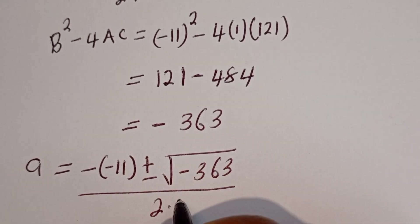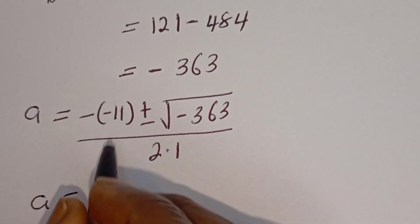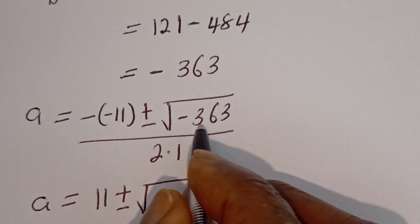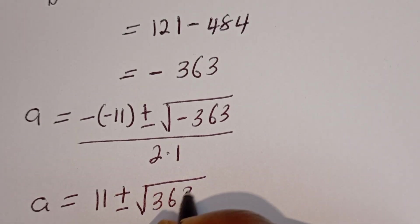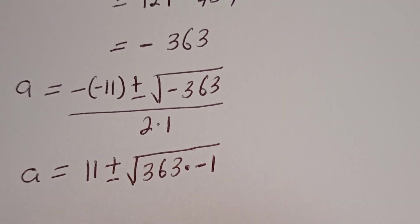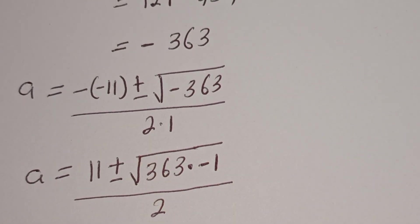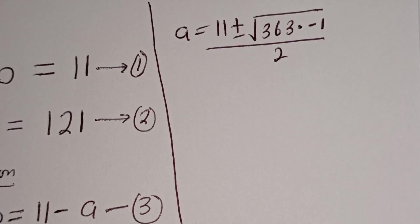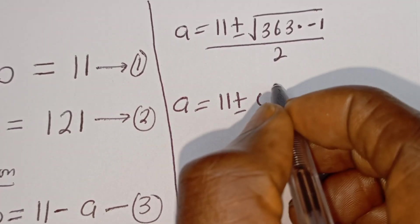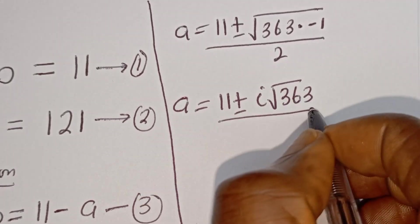Divided by 2 multiplied by 1. A is equal to minus multiplied by minus 11 — this is 11 — plus or minus square root of minus 360. Now 360 can be written as 360 multiplied by minus 1, then divided by 2 multiplied by 1, which is 2. So this can be written as A is equal to 11 plus or minus i square root of 360, divided by 2.